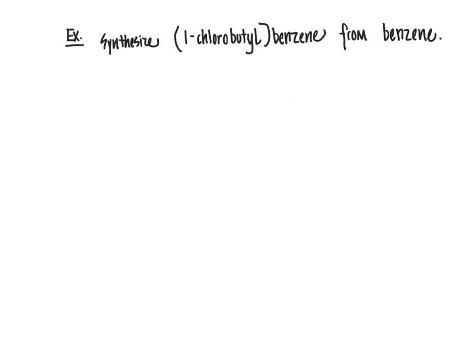Let's apply what we've learned to a synthesis problem: synthesize 1-chlorobutylbenzene from benzene. We need to go from benzene to a product that has one branch with a four-carbon chain — a butyl group — and a chlorine at the position-one carbon adjacent to the ring. We count from the aromatic ring as the parent group, so position one is right next to it.